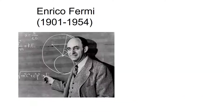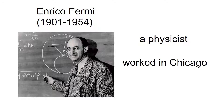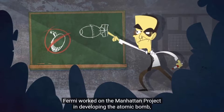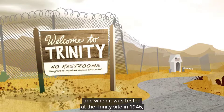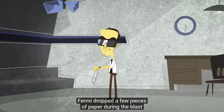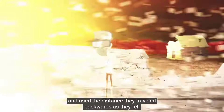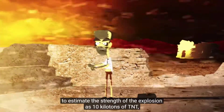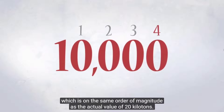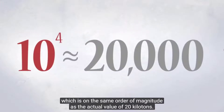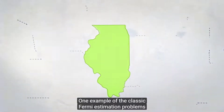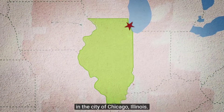This type of estimation gets its name from Enrico Fermi. He died back in the 1950s, and you don't need to know very much about him apart from this: he was a physicist, he worked in Chicago, and he was really good at this kind of really rough estimating. Fermi worked on the Manhattan Project in developing the atomic bomb, and when it was tested at the Trinity site in 1945, Fermi dropped a few pieces of paper during the blast and used the distance they traveled backwards as they fell to estimate the strength of the explosion as 10 kilotons of TNT, which is on the same order of magnitude as the actual value of 20 kilotons.